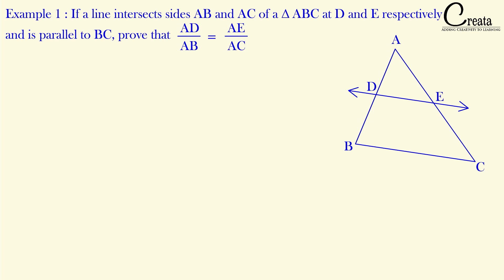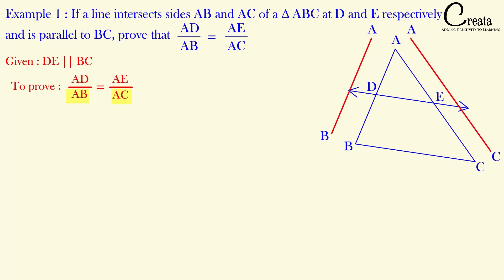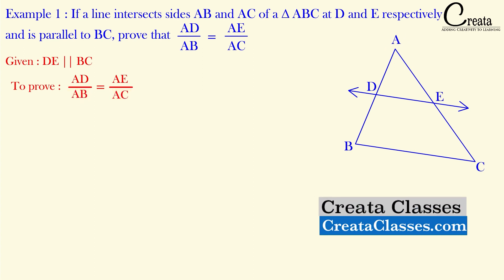If a line intersects sides AB and AC of triangle ABC at D and E respectively, and is parallel to BC, prove that AD upon AB is equal to AE upon AC. In this question, triangle ABC is given and a line intersects side AB and is parallel to BC. We have to prove the ratio AD upon AB is equal to AE upon AC. Note that AD and AE are the two segments, and AB and AC are the complete lengths of the triangle. It somewhat resembles the BPT theorem.